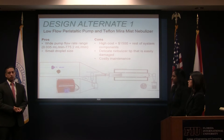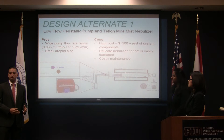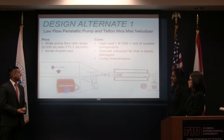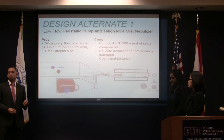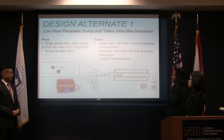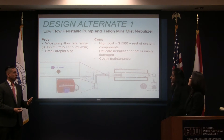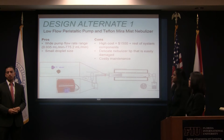The first design alternate is a low-flow peristaltic pump and a Teflon Miramiss nebulizer. Some advantages are that the pump has a wide flow rate range, which would help increase the production rate and make it more efficient, and it creates a small droplet size. Smaller droplets result in a smaller powder formed at the end when synthesized. The disadvantage is that just these two components alone cost $1,500, making it the most costly design alternate. Also, the nebulizer tip is difficult to handle because it's easily damaged.